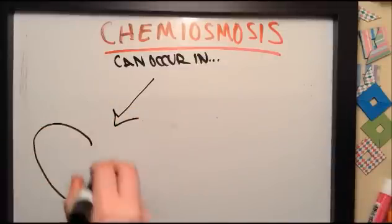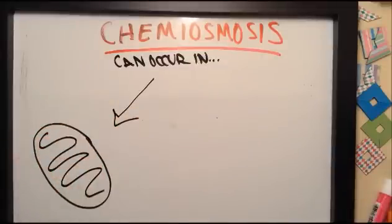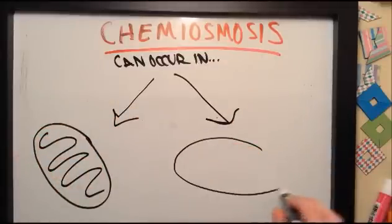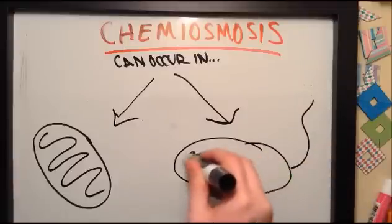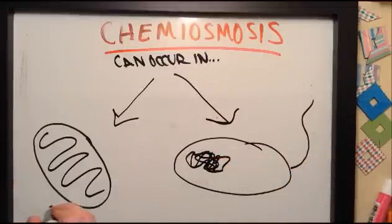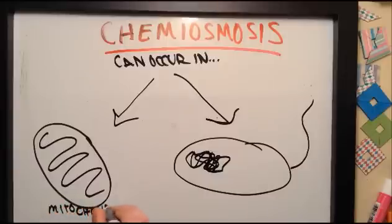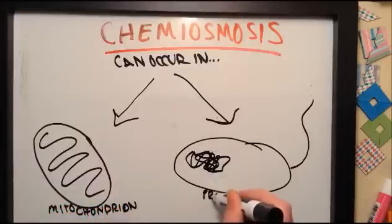It can occur in the mitochondrial membrane or in prokaryotes. They have ATP synthase embedded in their plasma membranes.